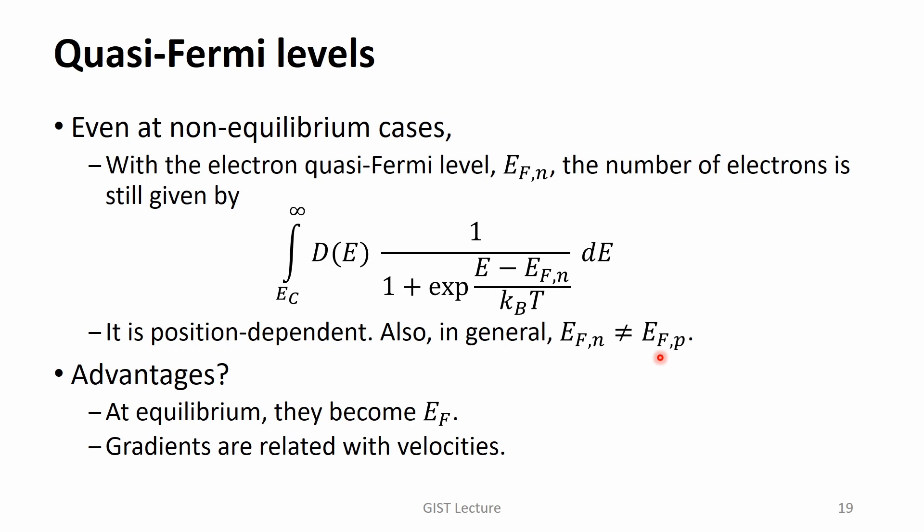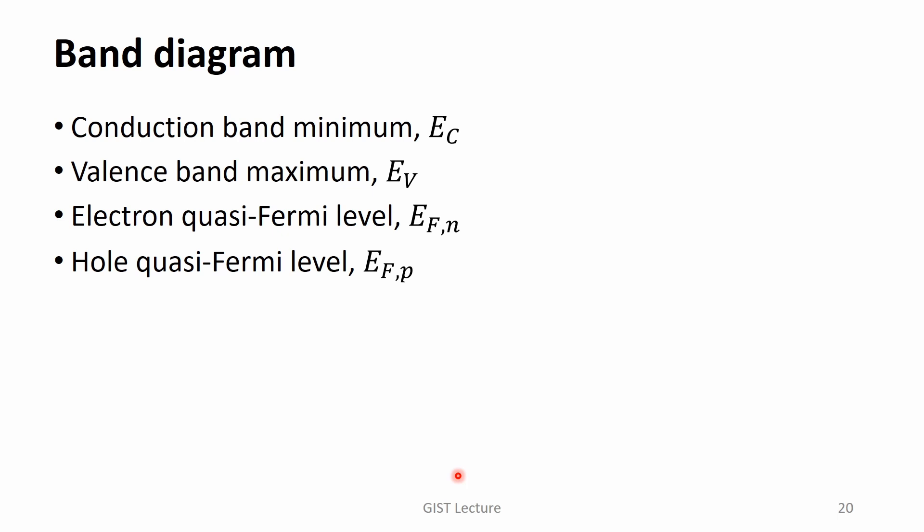So, when we draw the band diagram, we usually want to draw four quantities. The minimum energy of the conduction bands EC, the maximum energy of the valence bands EV, the electron quasi-Fermi level EFN, and the hole quasi-Fermi level EFP, they are drawn. These four quantities are all position-dependent. At a given position, using these numbers, the carrier densities can be easily estimated.